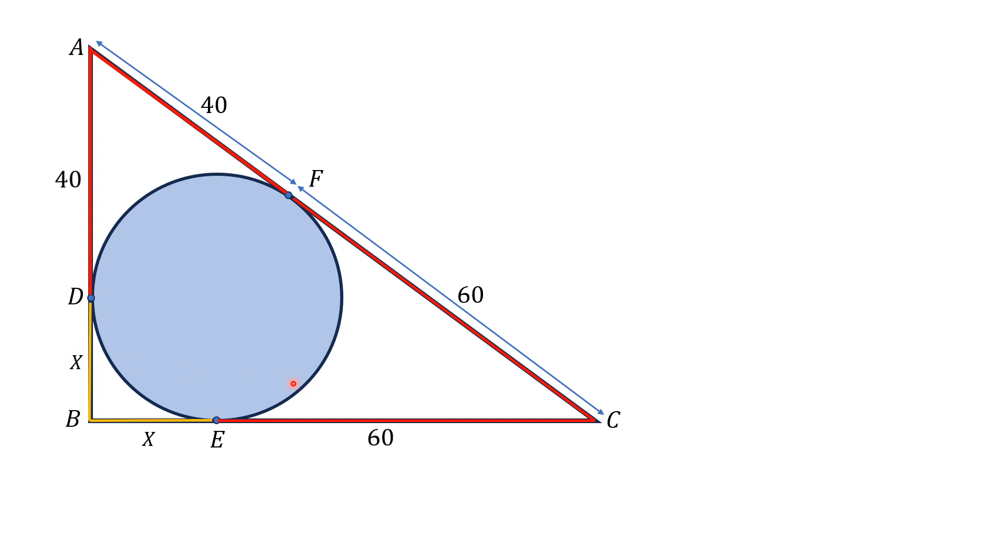Now, I am interested to find BC minus AB, which will be equal to BE plus EC minus AD plus DB. Substituting these values, BE is X, EC is 60 units, AD is 40 and DB is again X. So X will cancel out and BC minus AB will be equal to 20 units.